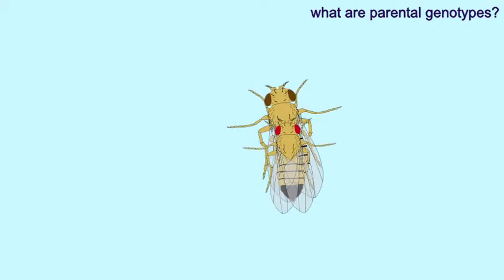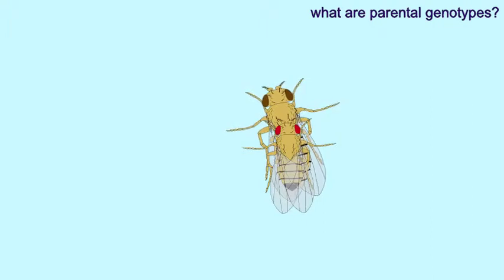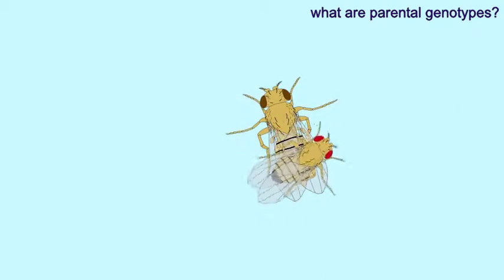In this Drosophila cross, what are the parental genotypes? The female possesses sepia eyes, which is a recessive mutation, so she must be homozygous recessive for the sepia allele.